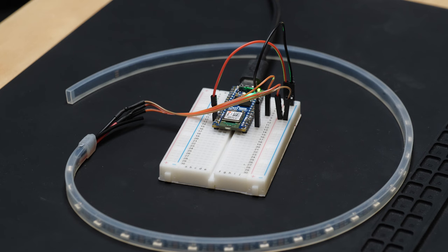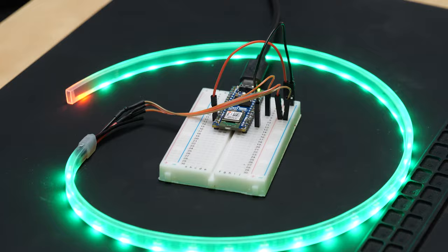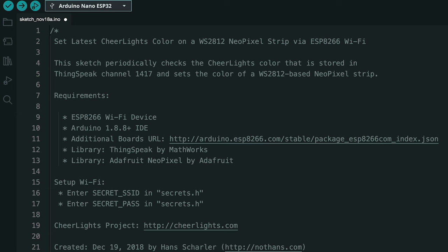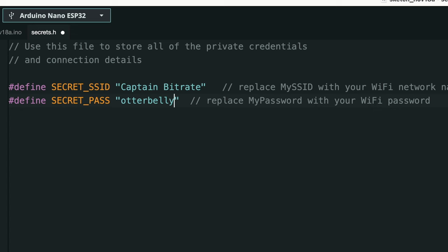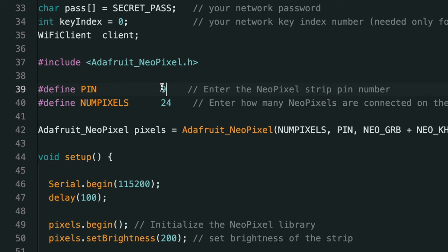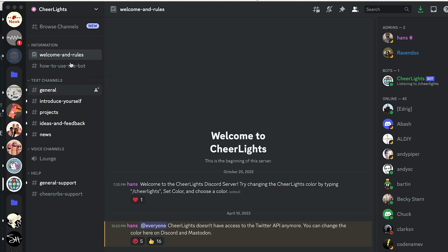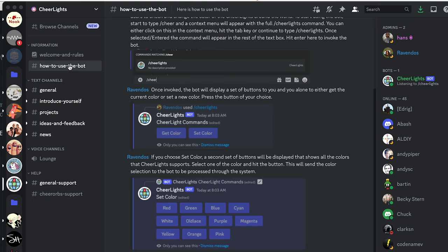Now you're ready to move on to the internet code. I got this code example from the CheerLights GitHub, then updated my WiFi network name and password, as well as the pixel pin, to match my own. The code periodically checks for updates on the ThingSpeak channel used to communicate the CheerLights color, then sets the LEDs to that color.